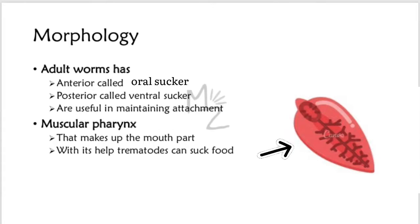Adult worm has an anterior and a posterior sucker. Anterior sucker is called oral sucker and the posterior one is called ventral sucker. Both these suckers are useful in maintaining the attachment. There is this structure that is called muscular pharynx that makes up the mouth part. With its help, trematodes can suck food from the host.